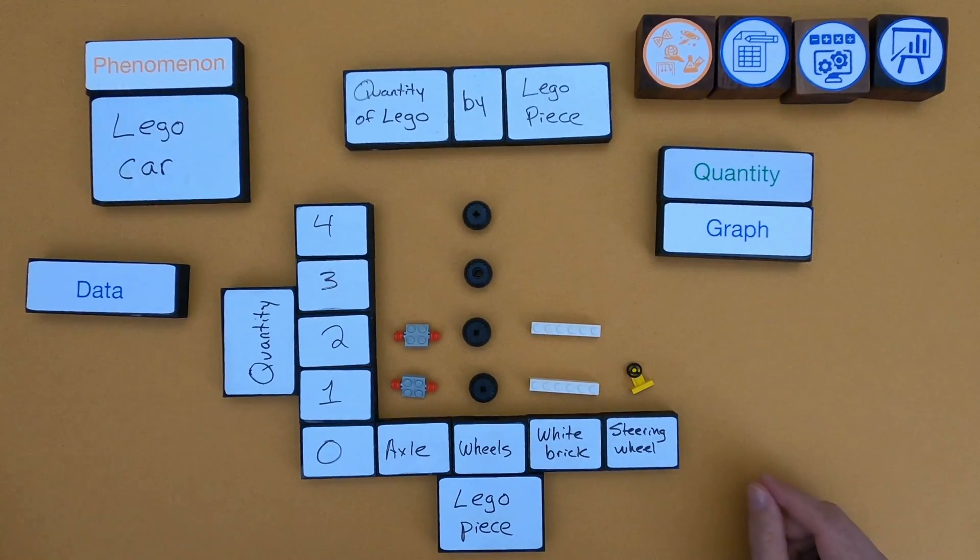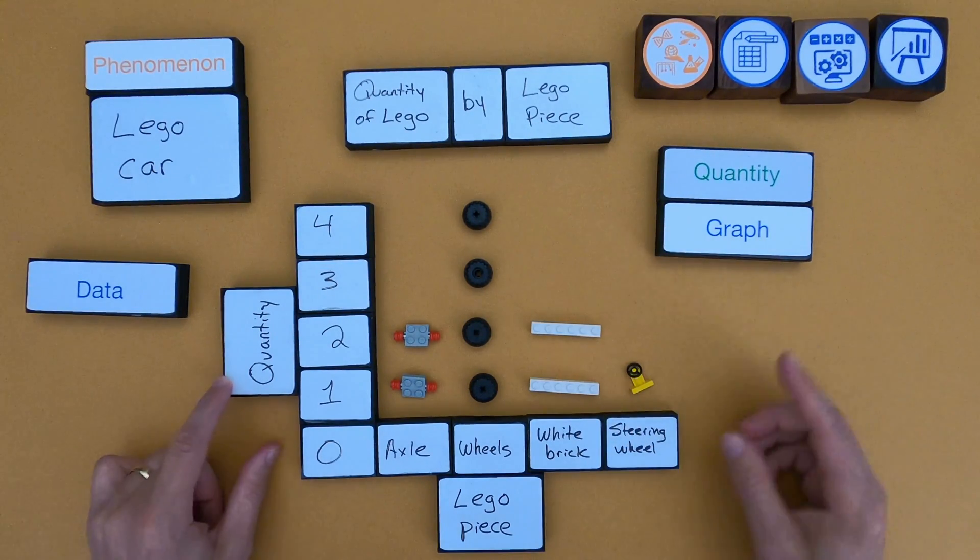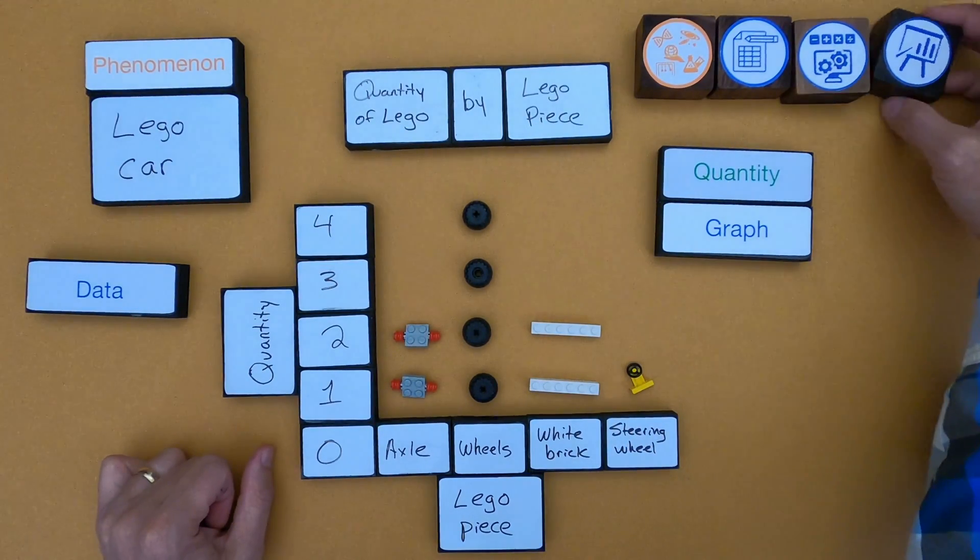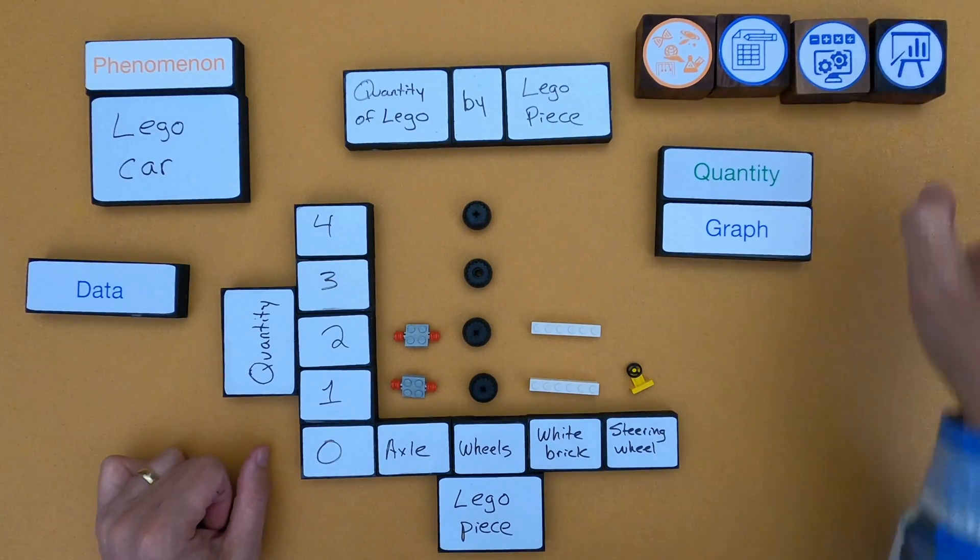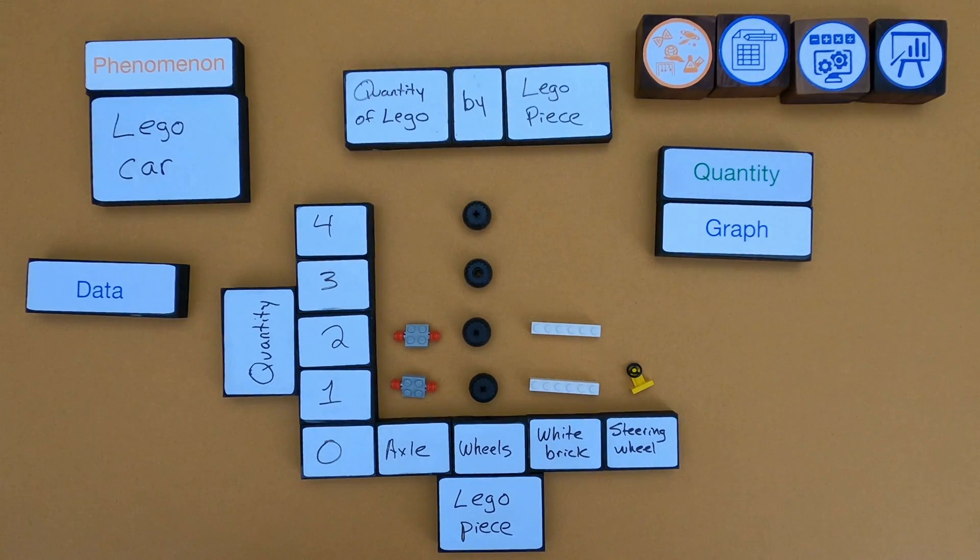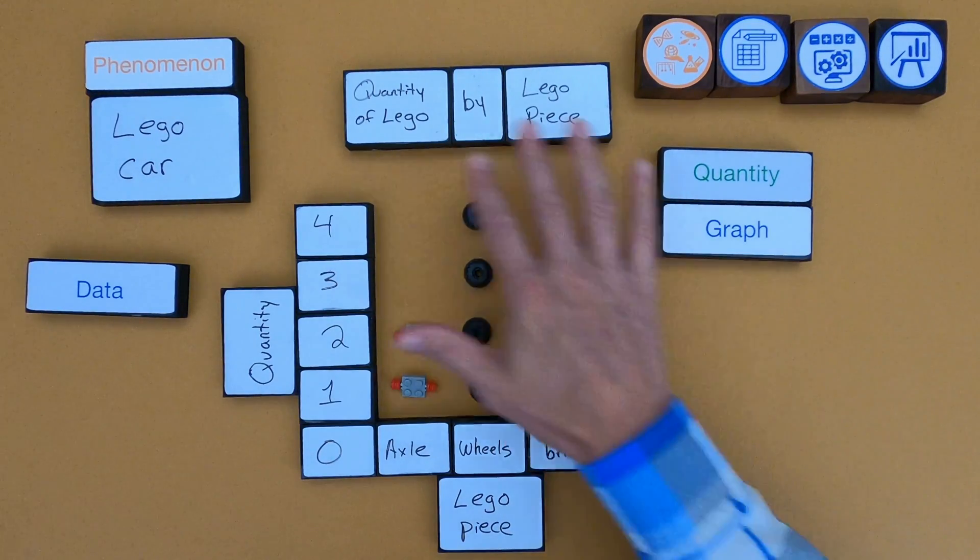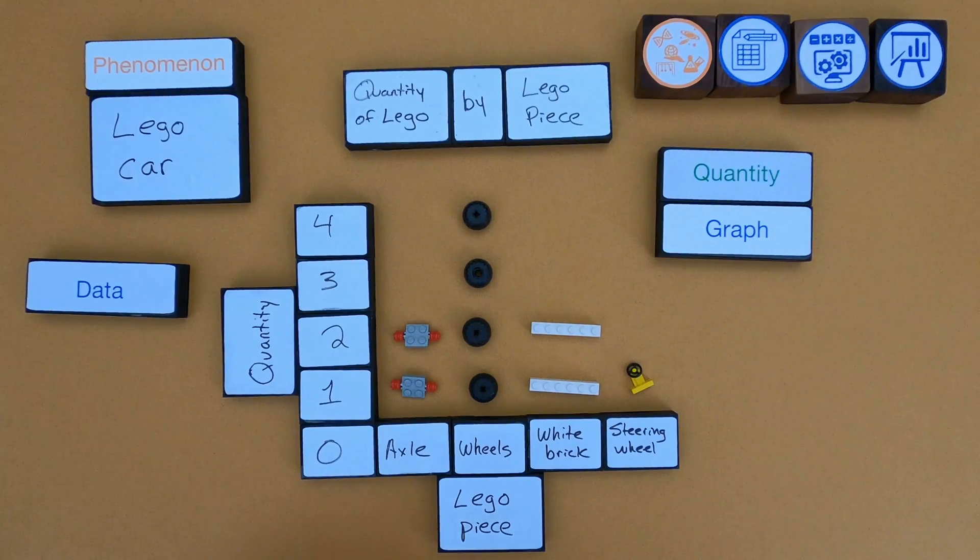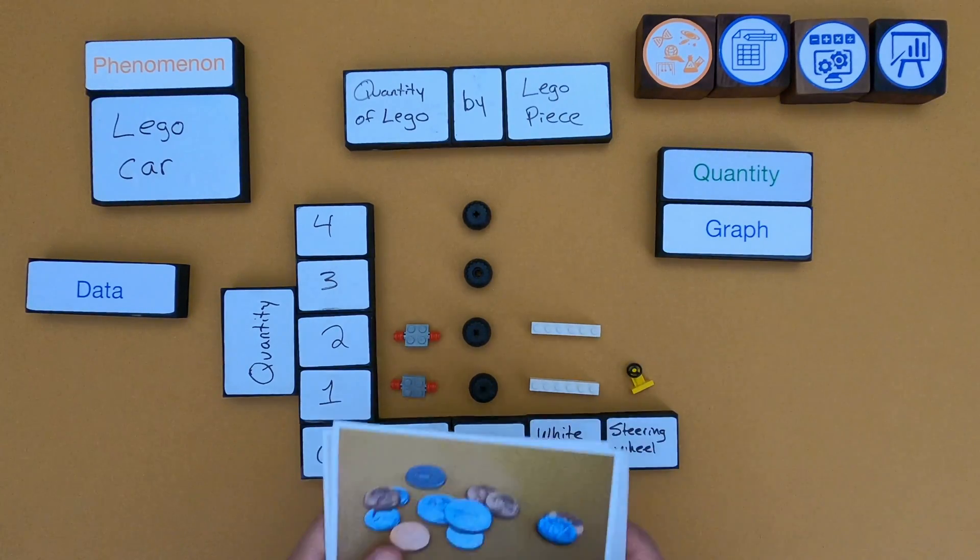Okay, so my title is the quantity of Lego by the Lego piece. So that's my graph. And so now I could take that graph and then read specific quantities back. And so that's all mathematical thinking is when you get started in science. The big thing that really makes this important is the quantity. Making sure that you're grabbing quantitative data is super important. So now that I've done this,